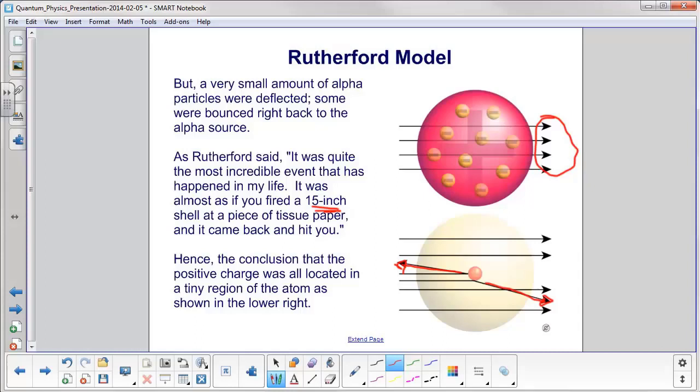Hence, it was concluded that the positive charge was all located right here in a tiny region of the atom, which would explain why most of the alpha particles got through. But every now and again, if you hit this nucleus, you'd have a particle either deflect or come right back at you.